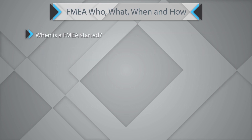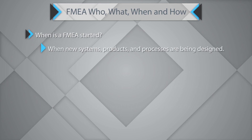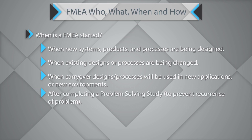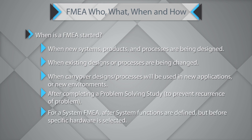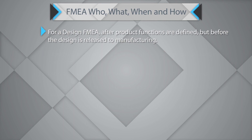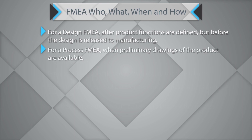When is the FMEA started? FMEA can be started when new systems, products, or processes are being designed, or when existing designs or processes are being changed, or when carryover designs or processes will be used in newer applications or environments, or after completing a problem-solving study to prevent recurrence of a problem. For a system FMEA, after system functions are defined but before specific hardware is selected. For a design FMEA, after product functions are defined but before the design is released to manufacturing. For a process FMEA, when preliminary drawings of the products are available.